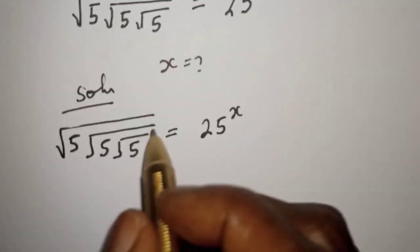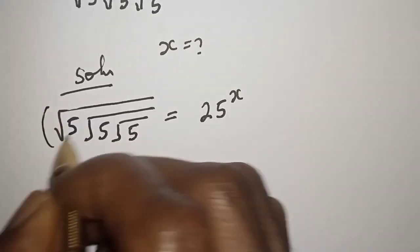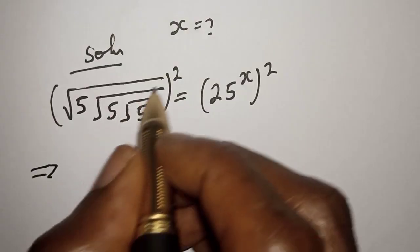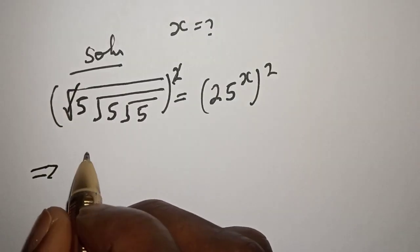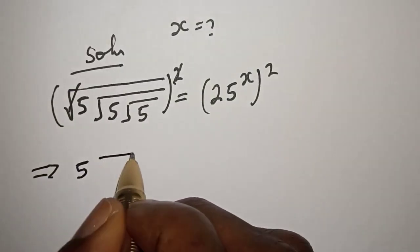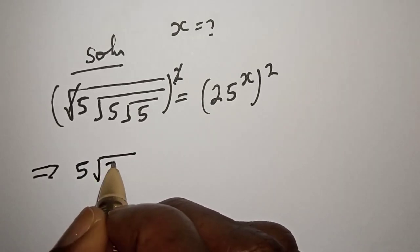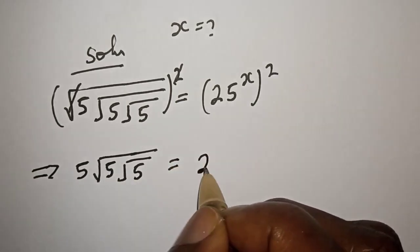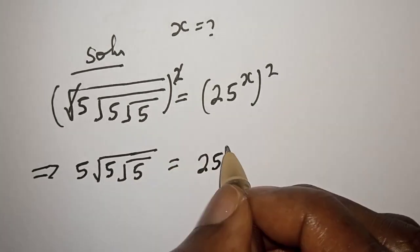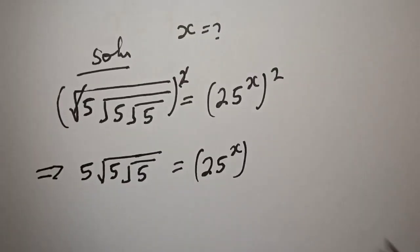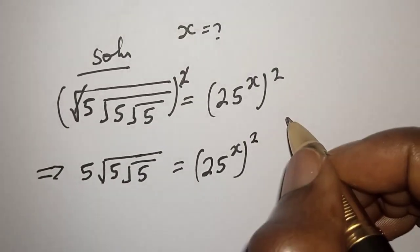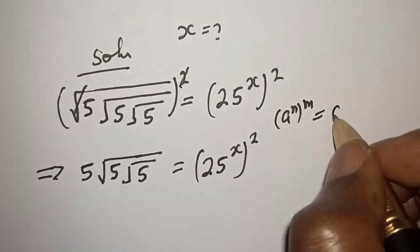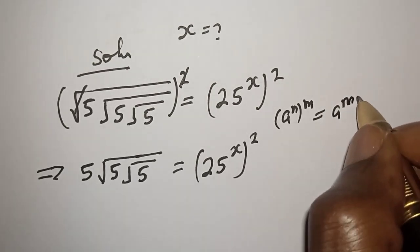Now let's square both sides of this equation. This will cancel this. We have 5, square root of 5, square root of 5 is equal to 25 raised to power x, squared. But take note of this: if you have a raised to power n, to the power of m, this is equal to a raised to power mn.